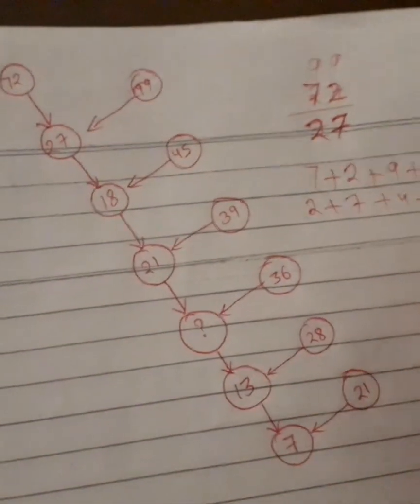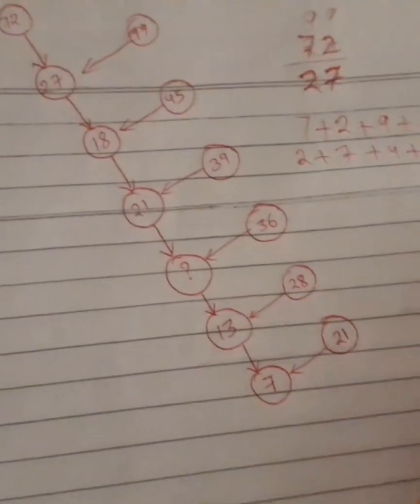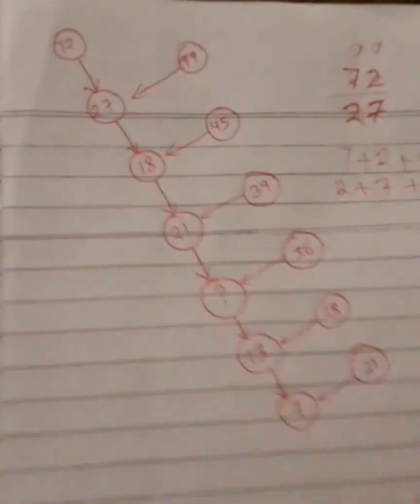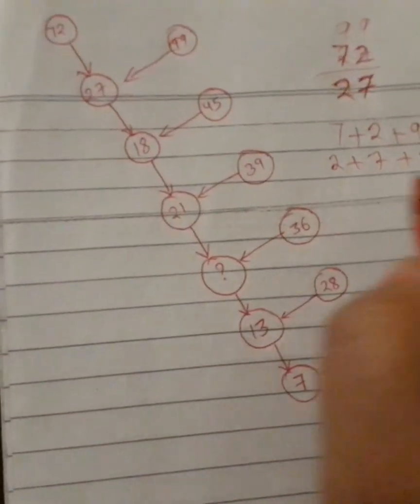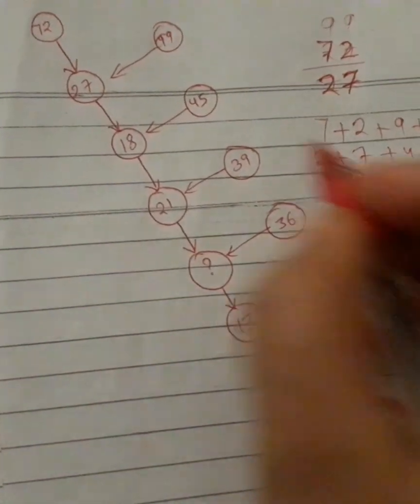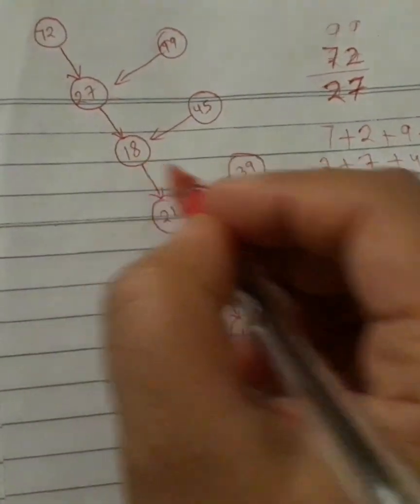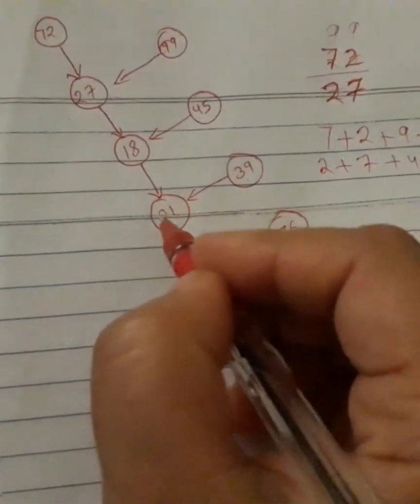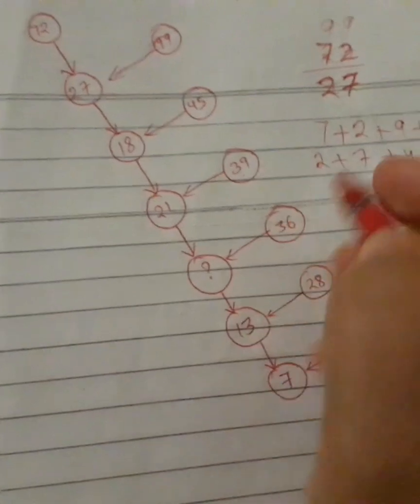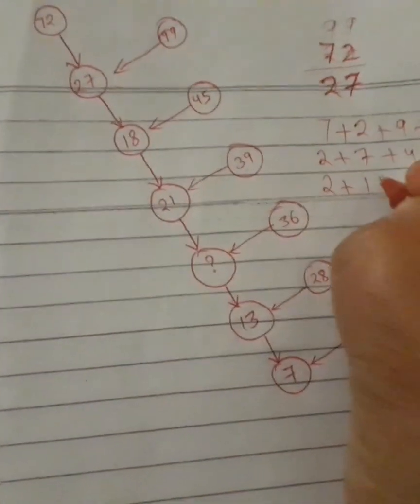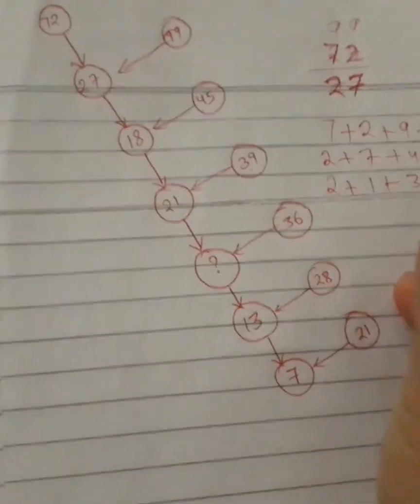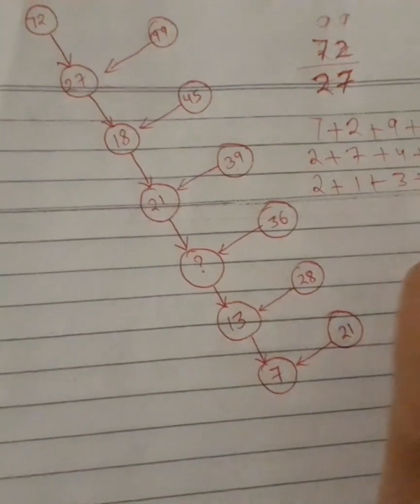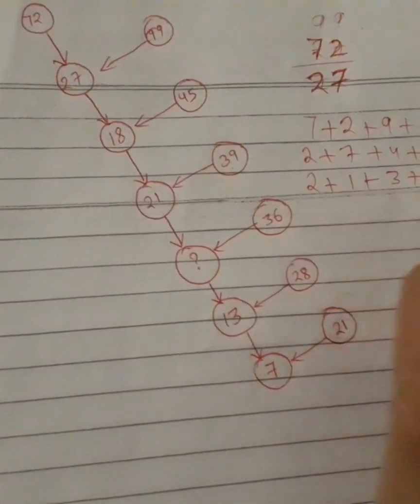9 plus 9, it's coming 18. And I know you're eager to know the answer. We will just go step by step. 2 plus 7, when you complete this one, we will get this. When we complete this one, 2 plus 1 plus 3 plus 6, we will get 3, 3, 6, 12.